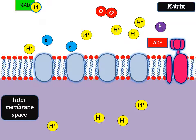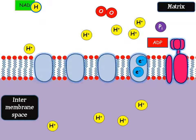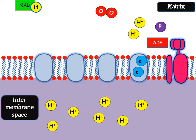The electrons are passed to the electron carriers — the proteins in the membrane — and they're passed from one protein to the next. As they move from one protein to the next, these proteins take some of the energy that the electrons have and use it to pump hydrogen ions across the membrane from the matrix into the intermembrane space, setting up a proton or hydrogen ion concentration gradient.